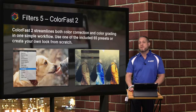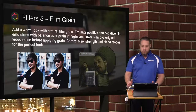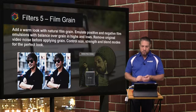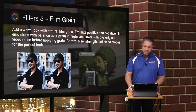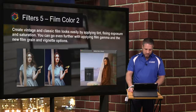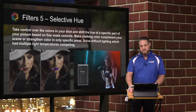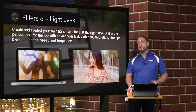It will streamline both color correction and color grading and include 65 presets for you to create your own look from scratch. Of the new plugins in Filters 5 Ultimate, you get Film Grain, which lets you add a warm look with a natural film grain, Film Color 2, Selective Hue, and finally Light Leak.